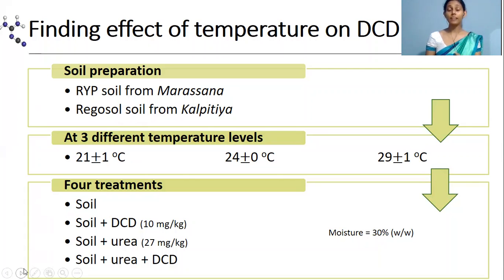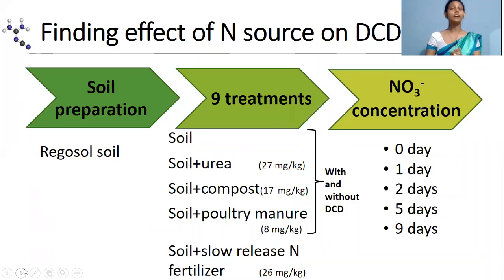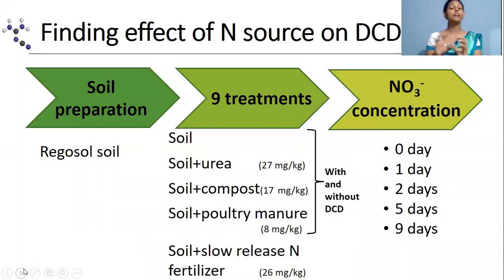Now let's look at the second experiment. It is about finding the effect of nitrogen source on DCD. Here, a leaching column experiment was conducted using only Regosol soil. First, soil preparation was done followed by the leaching column preparation.